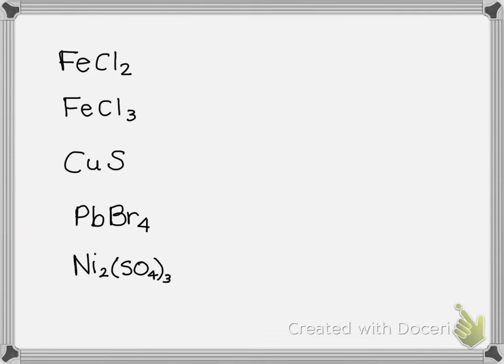Here are several examples, and all of these involve elements that have more than one charge. Let's look at iron — it can be a 2+ or a 3+, so it could be either one.